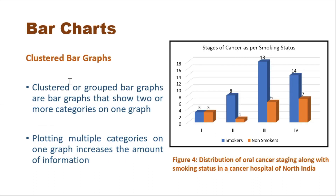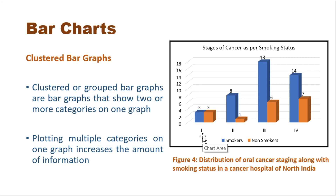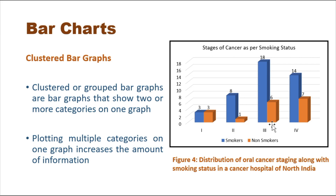Cluster or grouped bar graphs display two or more categories on one graph. Plotting multiple categories on one graph increases the amount of information conveyed — this is the key advantage over simple bar graphs. Figure four represents the distribution of oral cancer staging along with smoking status. Among stage one patients, out of six total, three were smokers and three were non-smokers. Out of nine stage two patients, eight were smokers and one was a non-smoker, providing additional information.